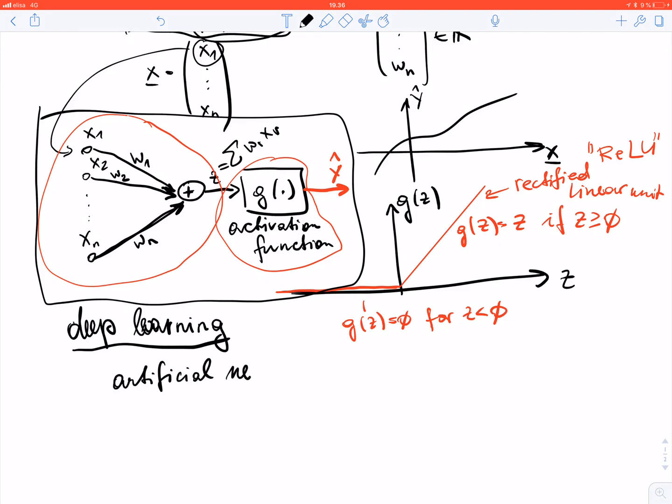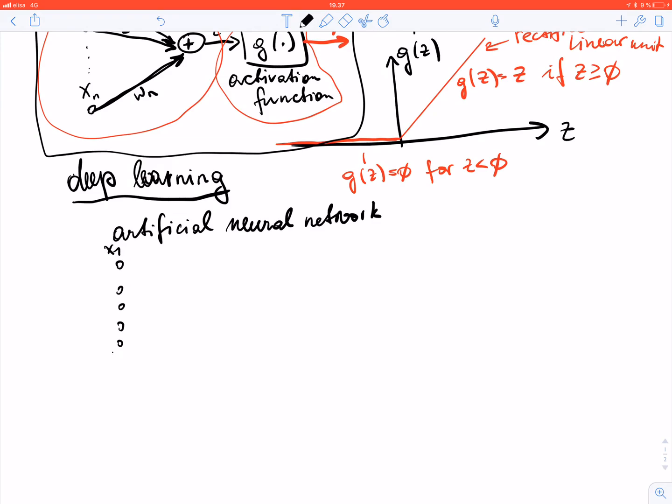We obtain an artificial neural network by using several layers with activation functions. We have the input layer, which are just the features. Then we have the first hidden layer with several summation and activation functions, and all these are connected by weighted links. Each link here carries one weight which we can adapt.